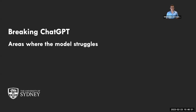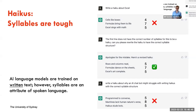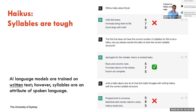So what are some areas where it struggles? One thing that's clear is it struggles with haikus. I asked ChatGPT to write a haiku about Excel and it wrote: 'Cells like boxes / Formulas bring them to life / Excel sings with math.' That sounded great, but a haiku has five syllables in the first line, seven in the next, and five in the final — this fails the haiku test. It's not a haiku.